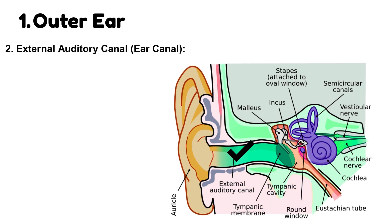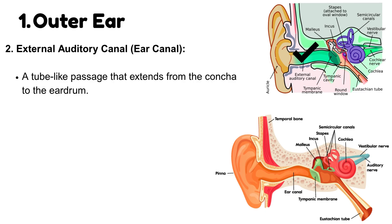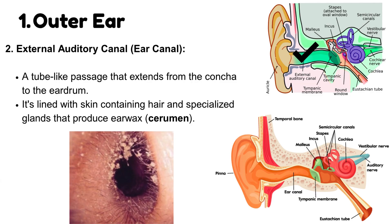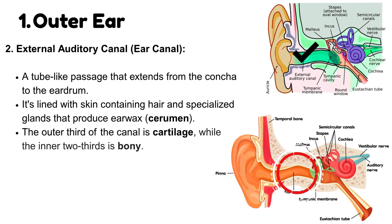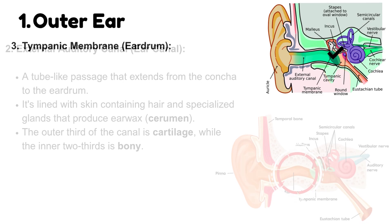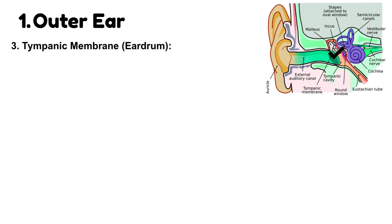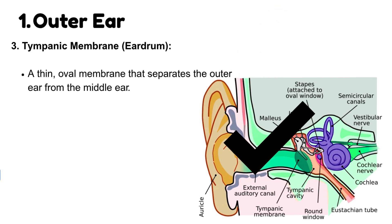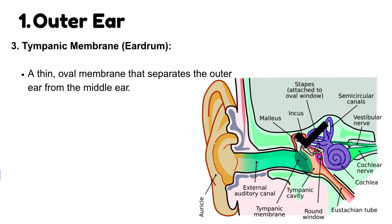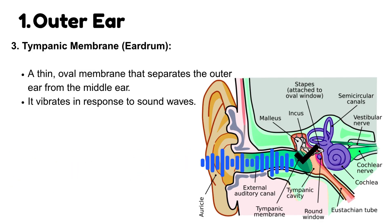The external auditory canal, also known as the ear canal, is a tube-like passage that extends from the concha to the eardrum. It's lined with skin containing hair and specialized glands that produce earwax, also known as cerumen. The outer third of the canal is cartilage, while the inner two-thirds is bony. The tympanic membrane, also known as the eardrum, is a thin oval membrane that separates the outer ear from the middle ear and vibrates in response to sound waves.